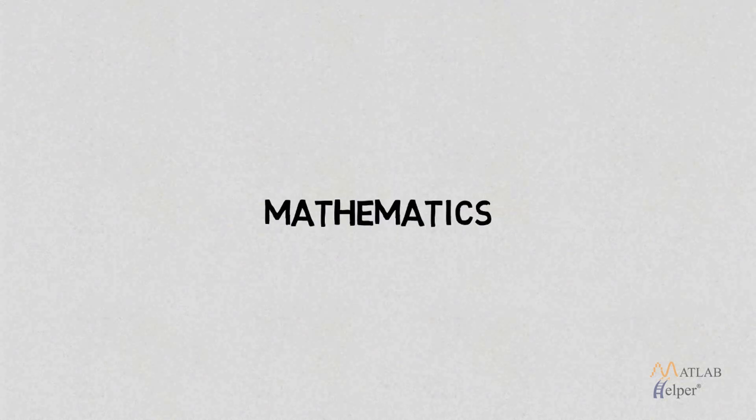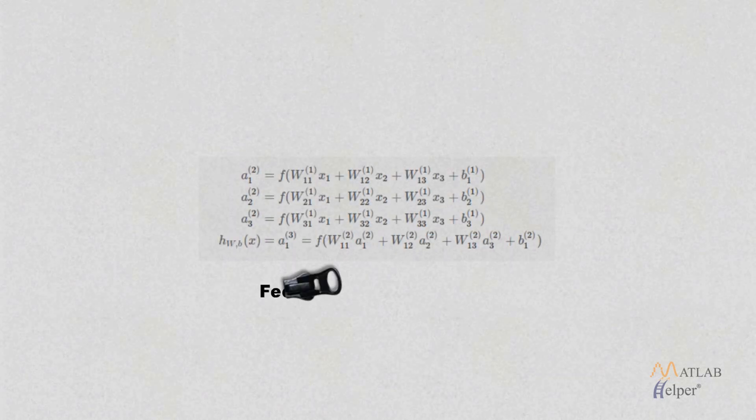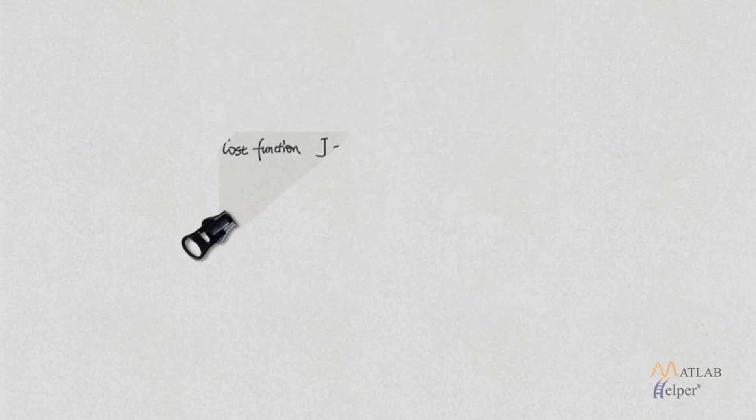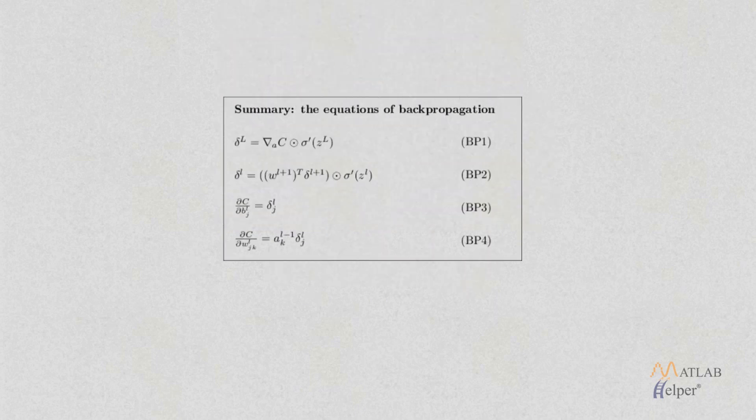Let's discuss the mathematics behind it. First we have feedforward propagation. Then the error is calculated using the cost function. Let's say we have a mean squared error cost function. Then the learning takes place with the help of backpropagation. These are the four equations of backpropagation.